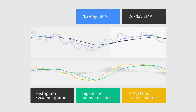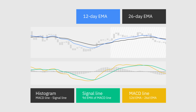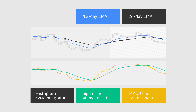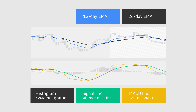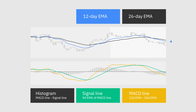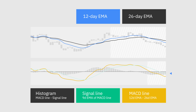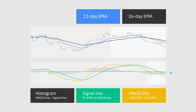The MACD indicator consists of three elements moving above and below the centre line: the MACD line, the signal line, and the histogram. The MACD line helps determine upward or downward momentum by measuring the gap between two exponential moving averages. The signal line is usually a nine-period EMA of the MACD line.